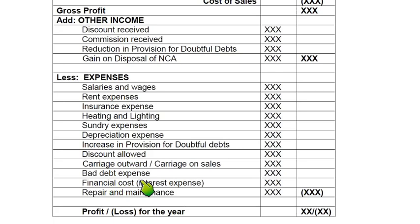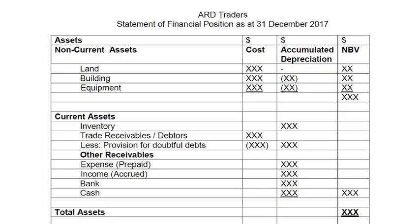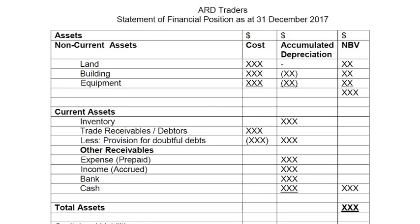Loan interest, also a financial cost, is calculated by multiplying the loan amount by the percentage given. For example, if there is 5% interest on a loan of 100,000, we multiply 5% by 100,000 to get 5,000. There can also be repair and maintenance or any other expense — this list is not exhaustive. We add all expenses, then take gross profit, add other income for the unnamed figure, then deduct all expenses to get the final figure: profit or loss for the year. The older term was net profit or net loss, but the newer term is profit for the year or loss for the year.